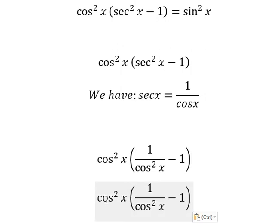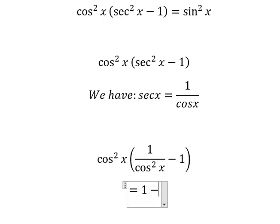Next, cos squared x is multiplied by 1 over cos squared x minus 1. So we have 1 minus cos squared x.